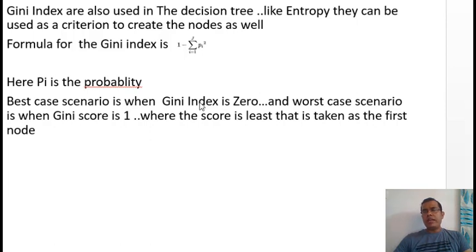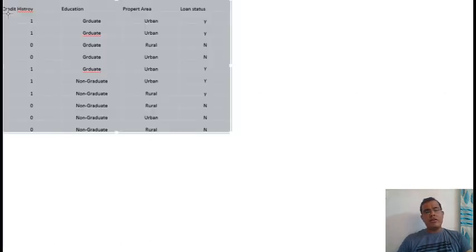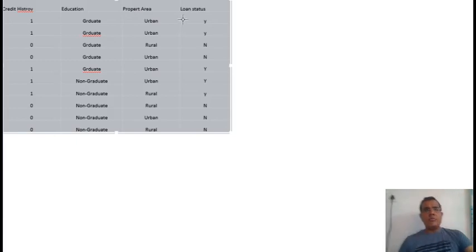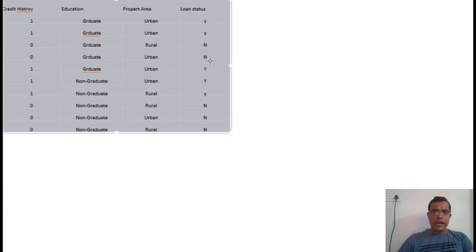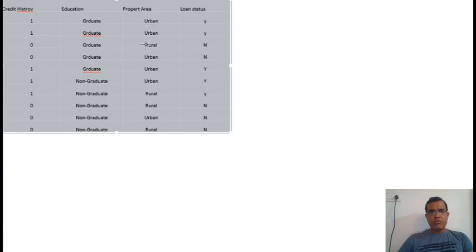Let's take one example. I have four columns: credit history, education, property area, and loan status. Loan status is the target variable — either Y or N. Credit history is either 1 (good) or 0 (bad). I've taken this dataset purposefully because it has been used in my previous videos so people can easily connect to it. Education is graduate or non-graduate; property area is either urban or rural. So I have three X variables and one target variable.